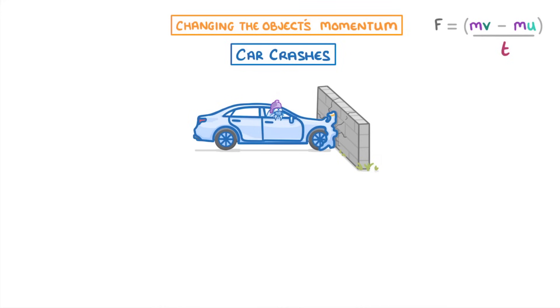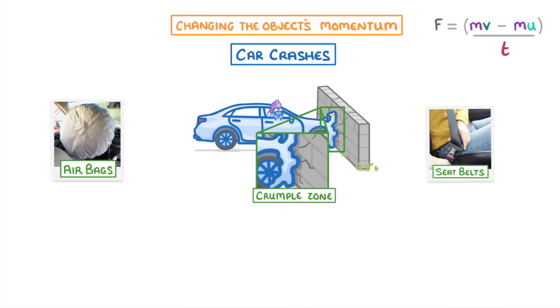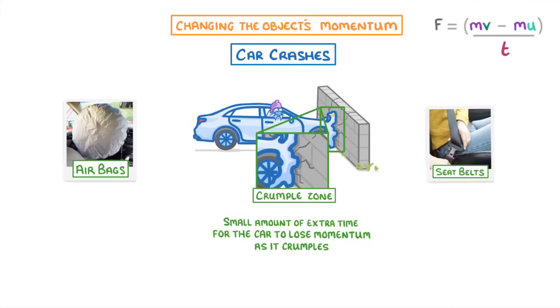In order to help them achieve this, cars have to, by law, be built with a bunch of different safety features, like crumple zones, seat belts, and airbags. Crumple zones are at the front and back of the car and can crumple on impact, so that instead of stopping suddenly, there's a small amount of extra time for the car to lose momentum as it crumples.